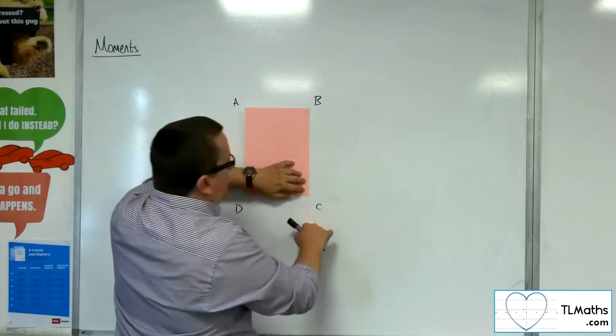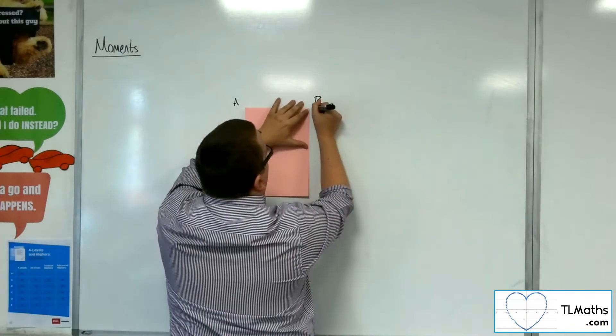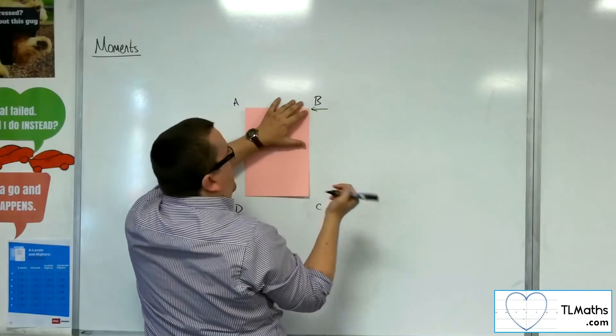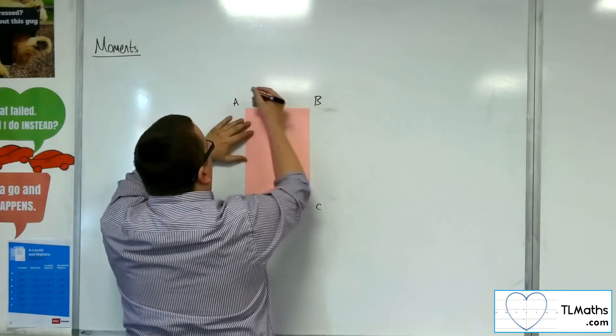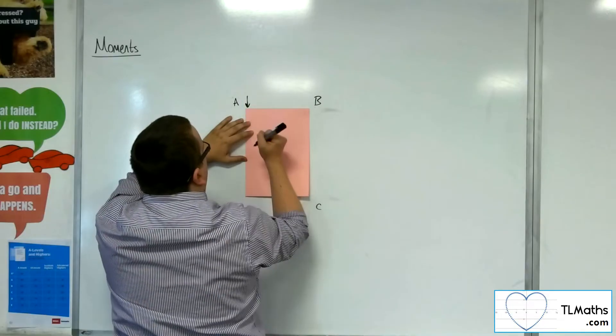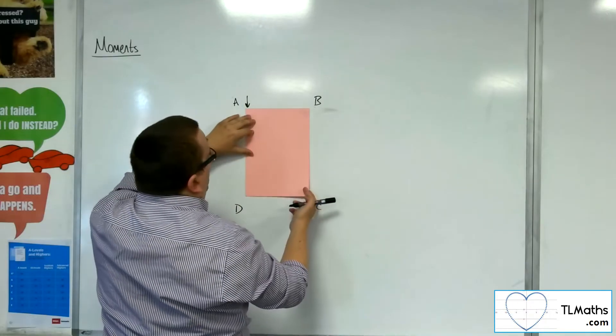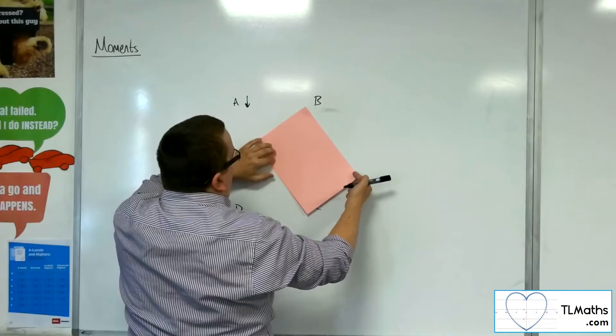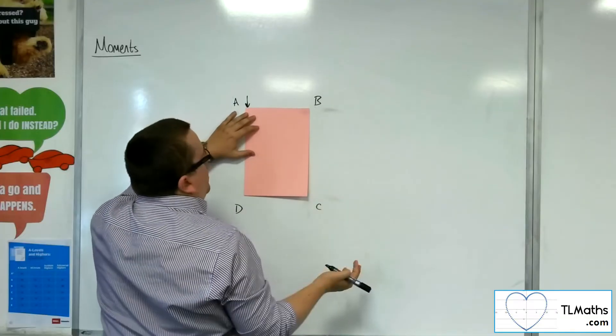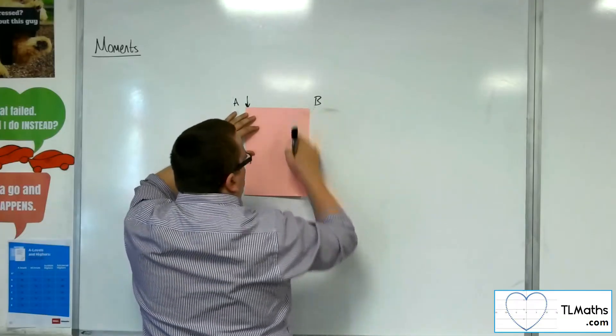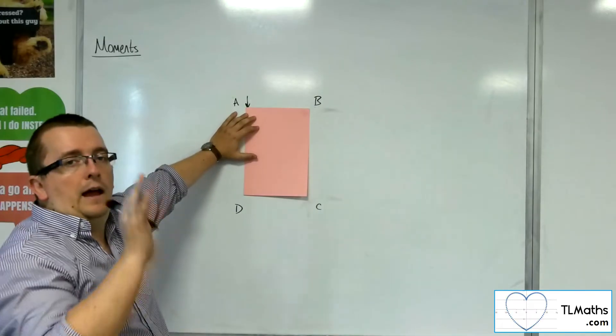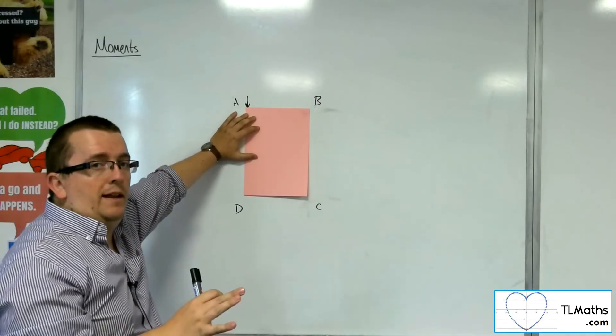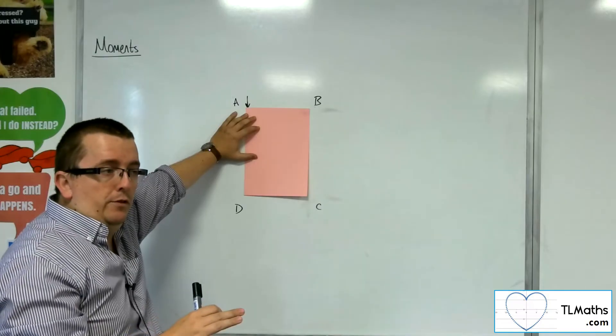So that wouldn't cause it to move. I could put the force there, and that wouldn't cause it to move. I could put the force here, and that would make it move anti-clockwise round. So depending on where the force is applied will make the laminar move round.